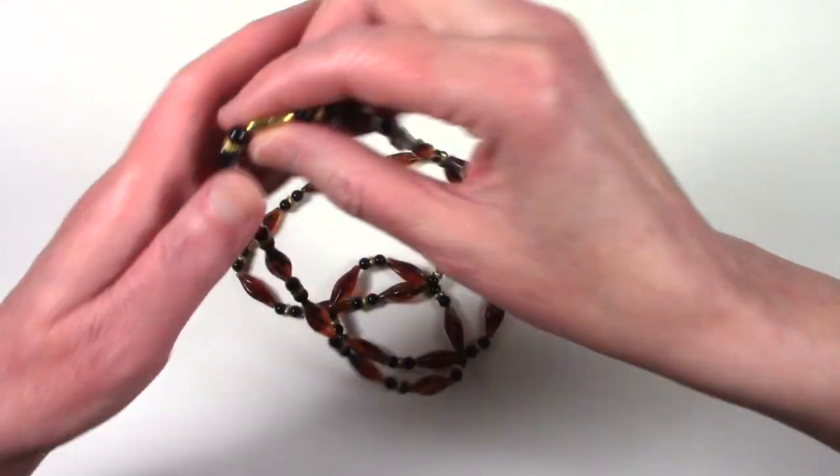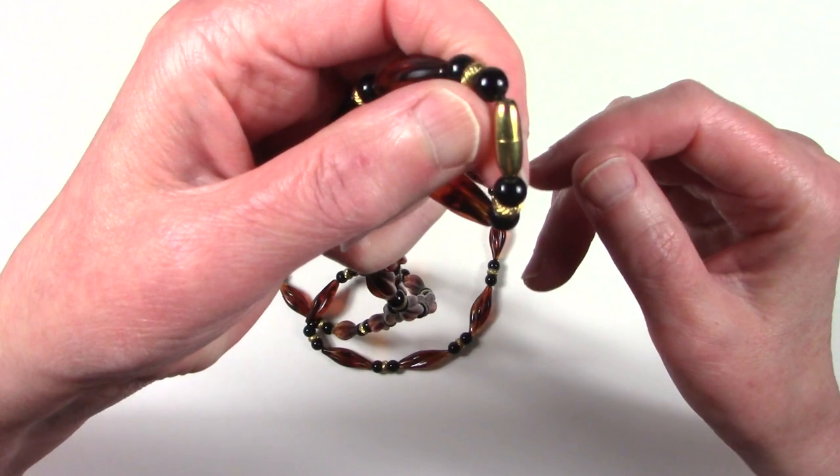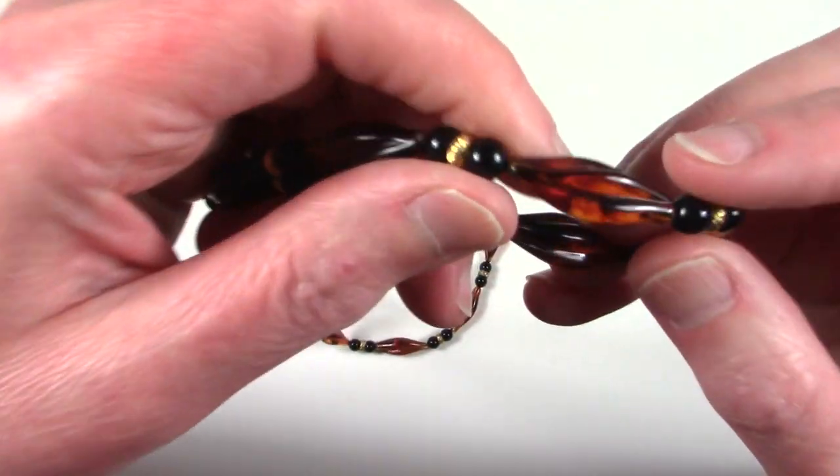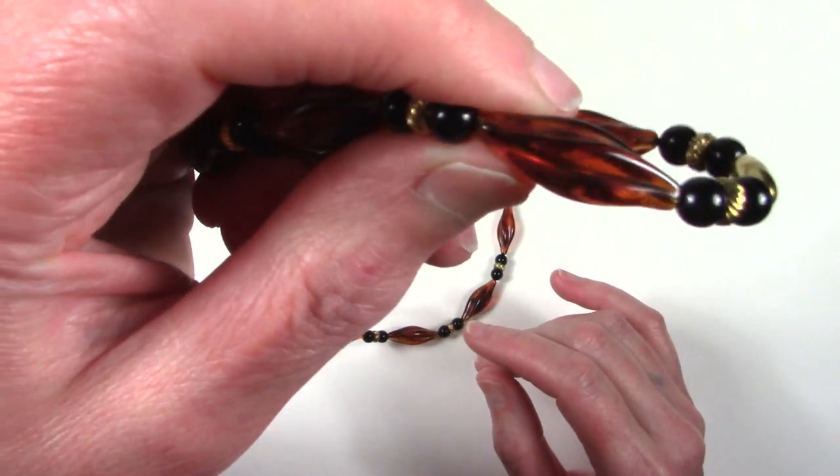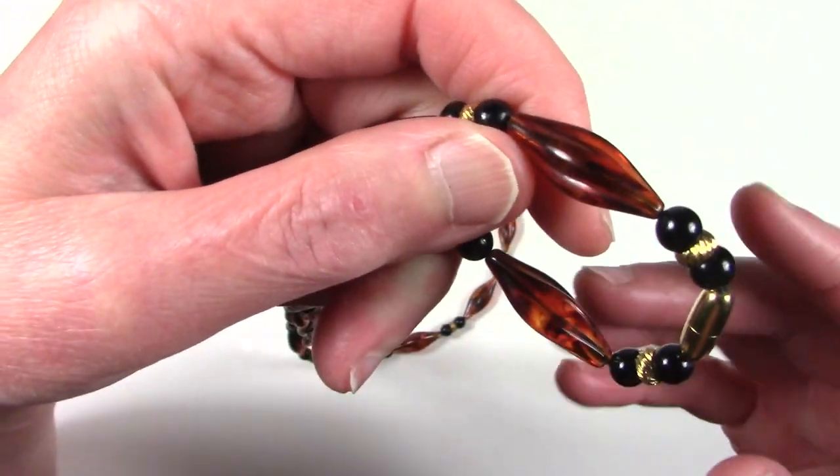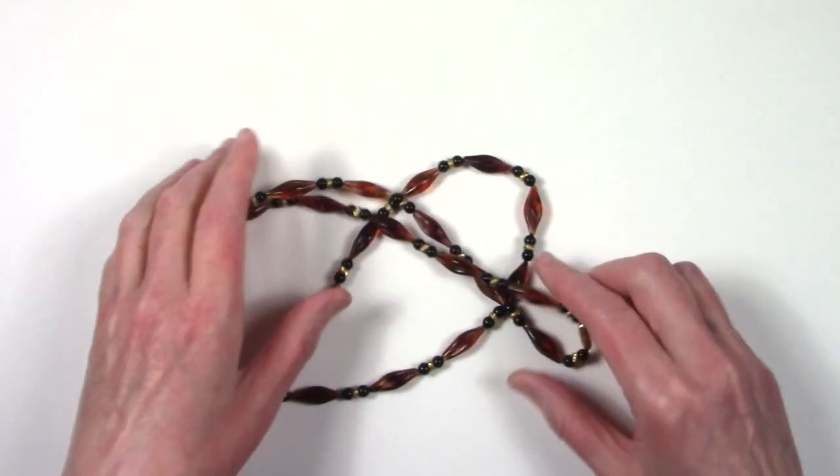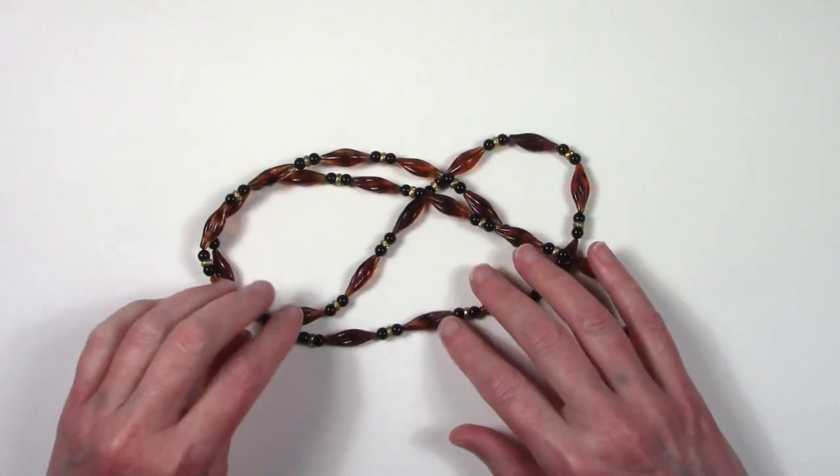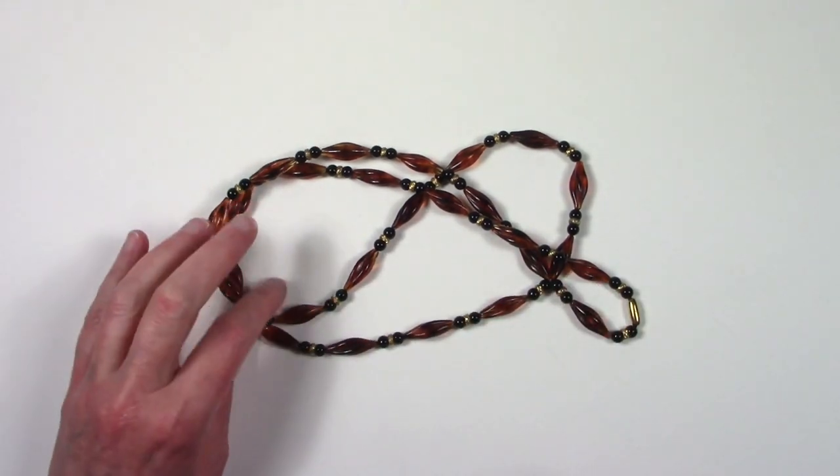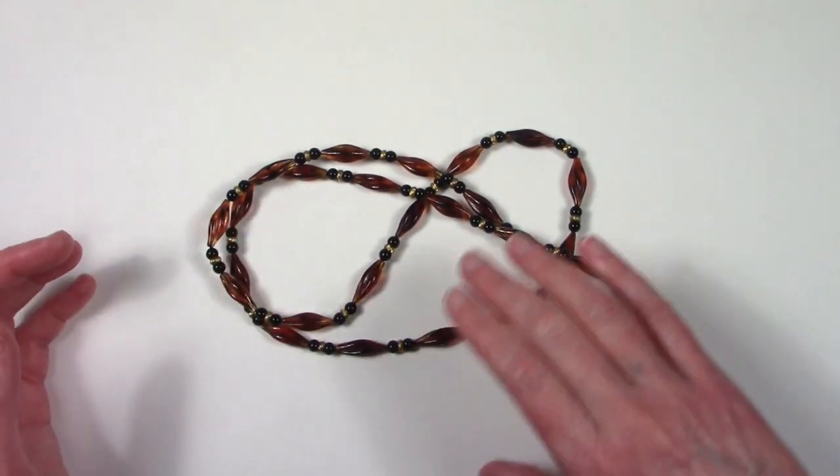I'll show you the clasp. We have this barrel clasp right here and then you can see the pattern in the plastic beads. I would definitely list this on eBay, maybe Etsy if I could figure out the decade. It's probably 1970s.